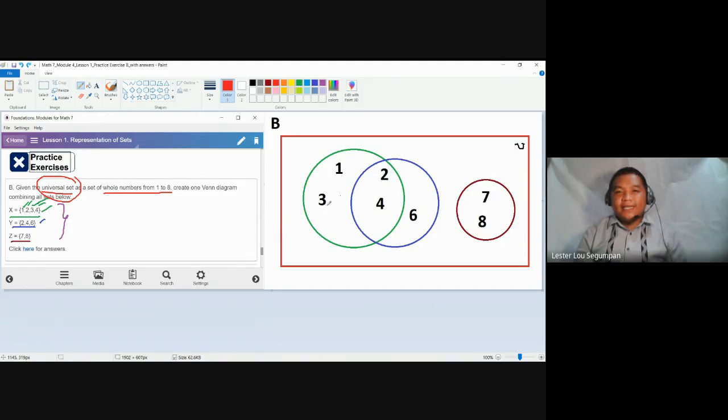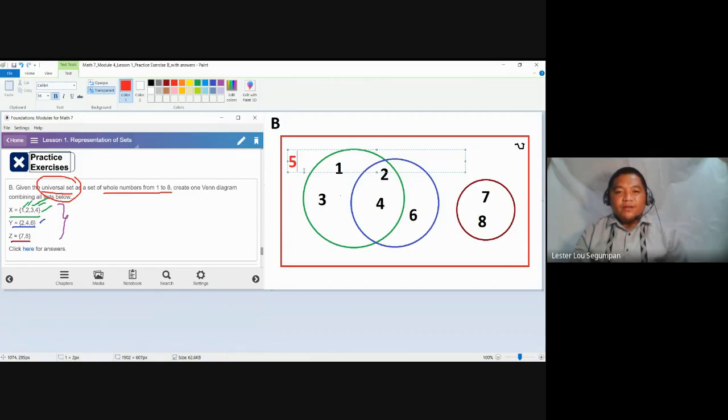5 is a member of the universal set. So in short, it should be part of the rectangle shape inside. But 5 is not a part of set X, represented by the green oval shape. So 5 can't be placed here. 5 cannot be placed here because 5 is not part of X. 5 can't also be placed here because 5 is not part of set Y. How much more with here in the middle? Because here in the middle is part of both green, representing X, and blue, representing Y. And definitely 5 cannot be placed here because in Z, it's only 7 and 8. So where do we place 5?